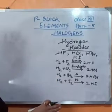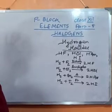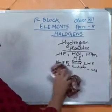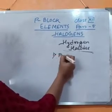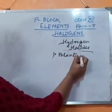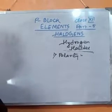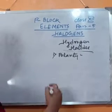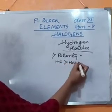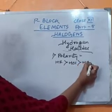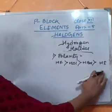More than the preparation of hydrogen halides, what is important is the properties. The first property is polarity of the hydrogen halides. The polarity order is: HF is more polar than HCl, which is more polar than HBr, which is more polar than HI. So the polarity of the hydrogen halides decreases in this order.